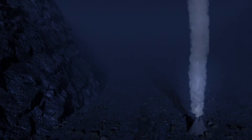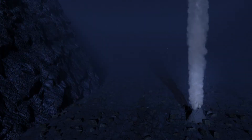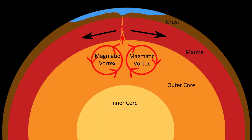SEDEX deposits occur as the result of the venting of a mineral-rich brine into sea basins. This type of deposition occurred in ancient sea basins up to two billion years ago and are still occurring to this day. This venting is a result of extension faulting in the rocks that make up the sea floor, caused by magmatic vortices in the Earth's liquid outer core putting an enormous amount of stress on the rock that makes up the Earth's crust, causing it to separate.